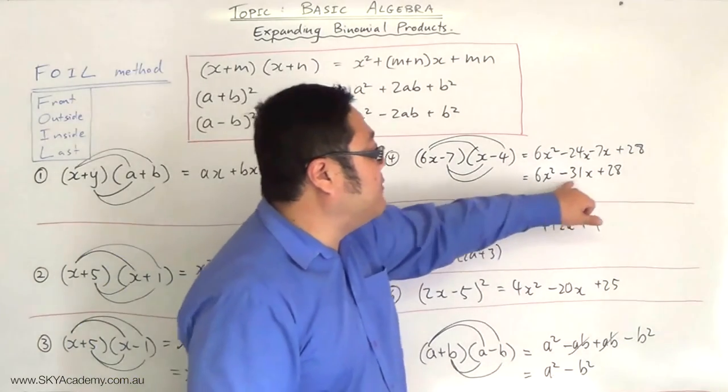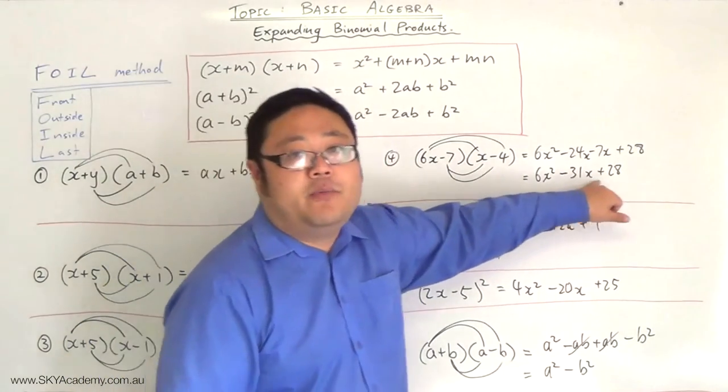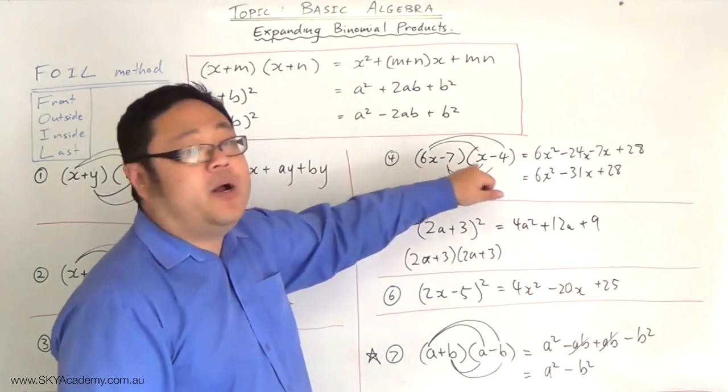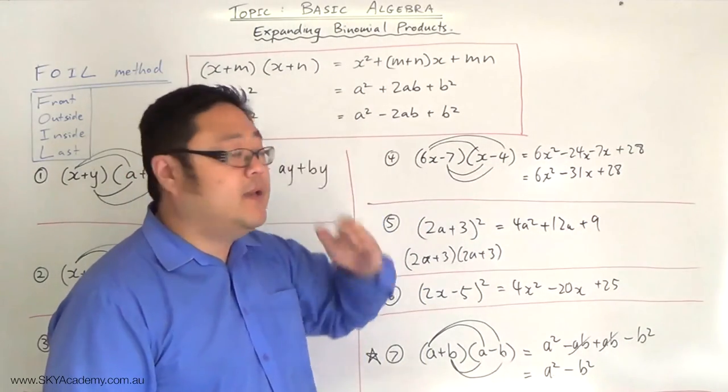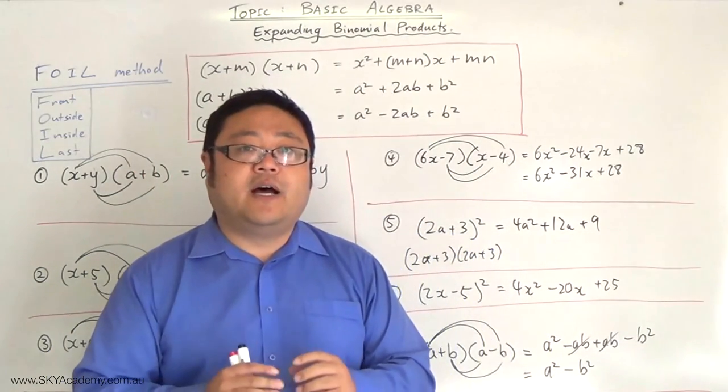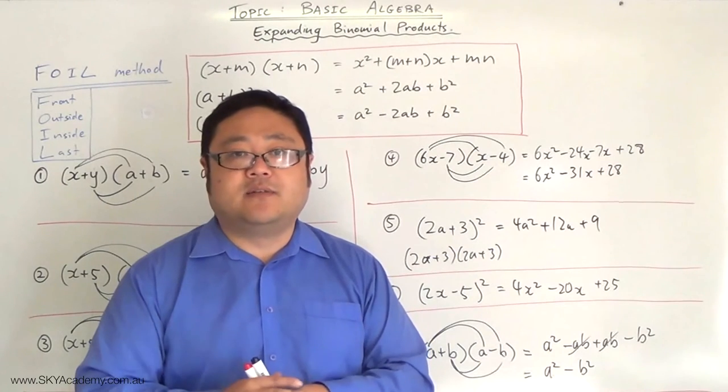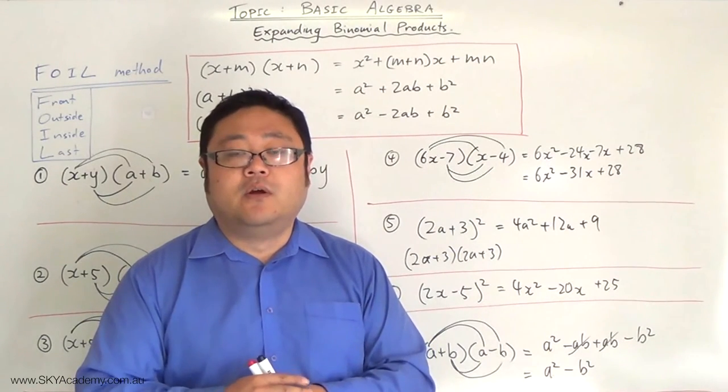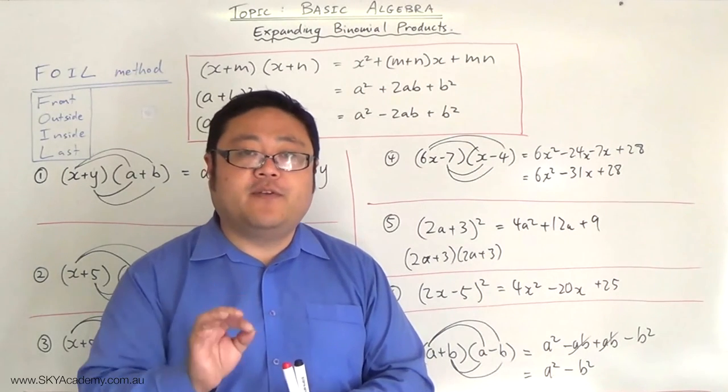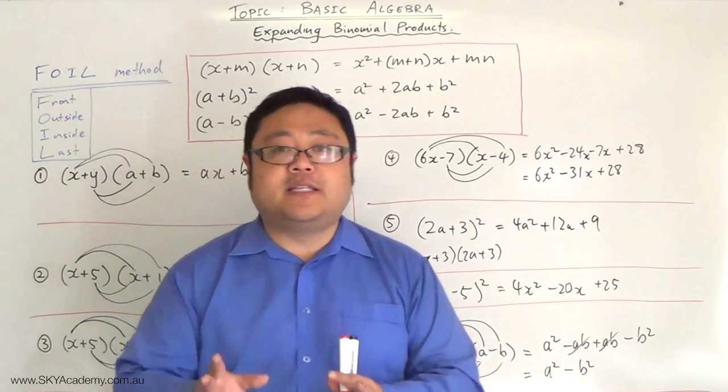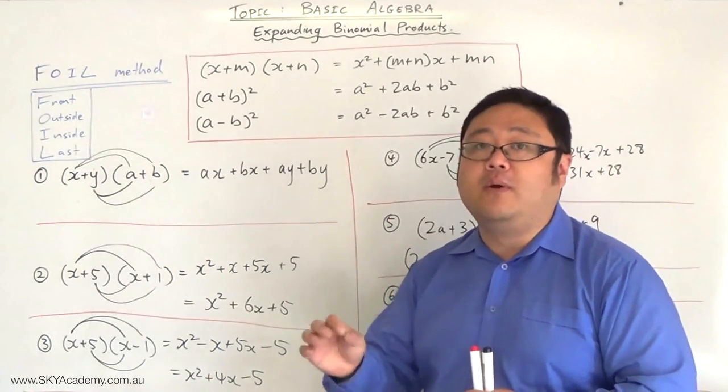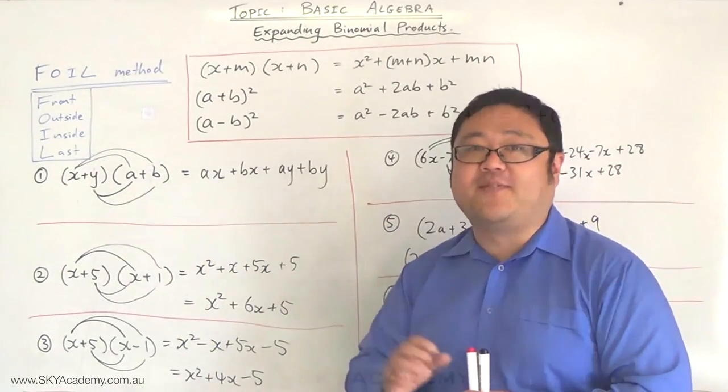So the opposite of expanding, which is what we've just done, is factorizing. In other words, we'll go from this expression, which is called a trinomial—we'll go from trinomials to a binomial product. And that's the whole process called trinomial factorization, or quadratic, or solving quadratics, or factorizing quadratics. So thank you very much for watching, and on the next episode we'll be doing a little bit more expansion before we move into factorization. Thanks for watching.